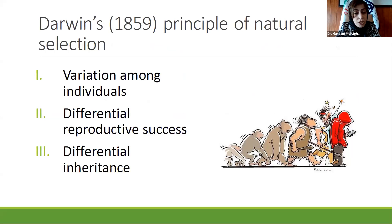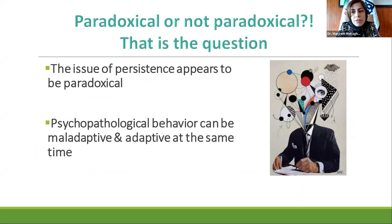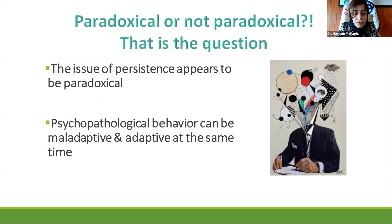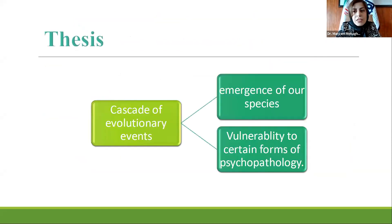Variation exists among individuals. Those individuals who exhibit useful traits in the struggle for life have different reproductive fitness. And there is a differential inheritance of those factors that gave rise to the favorable traits. But the persistence of psychopathology appears to be paradoxical given the editing power of natural selection. Some say that forms of behavior generally considered psychopathological and maladaptive can be considered adaptive within certain conditions and enhance an individual's reproductive fitness.